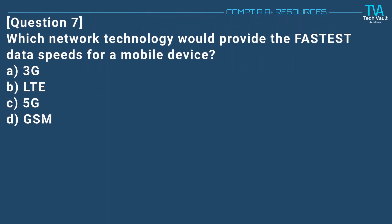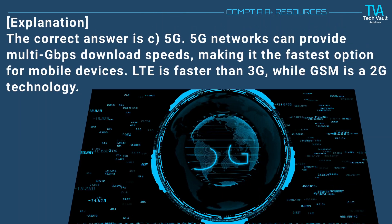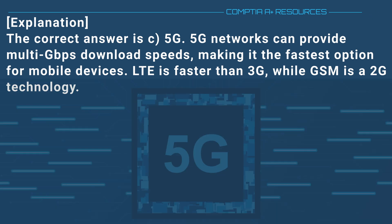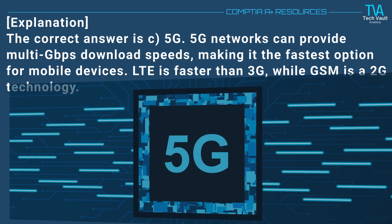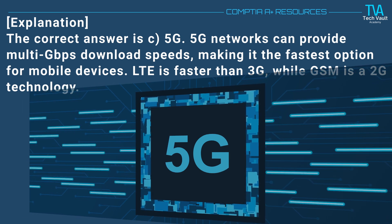Question 7. Which network technology would provide the fastest data speeds for a mobile device? A. 3G. B. LTE. C. 5G. D. GSM. The correct answer is C. 5G. 5G networks can provide multi-Gbps download speeds, making it the fastest option for mobile devices. LTE is faster than 3G, while GSM is a 2G technology.